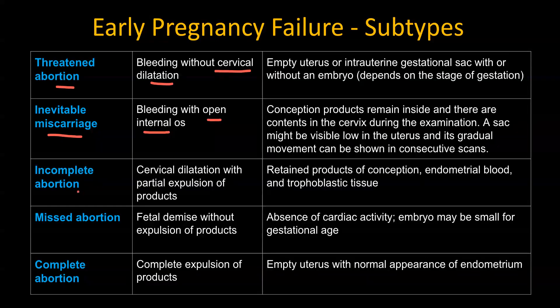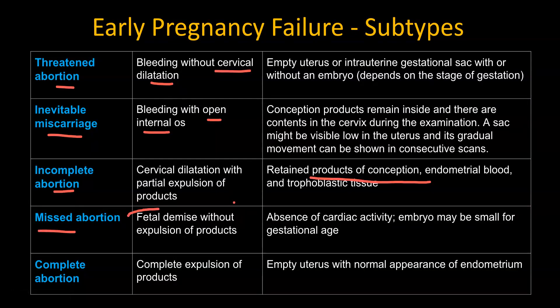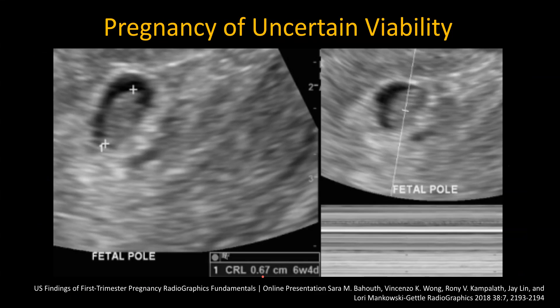Incomplete abortion is when there is cervical dilatation with partial expulsion of products, and you will see retained products of conception with some endometrial content. Missed abortion is when there is fetal demise with no expulsion of products — on ultrasound you'll see a gestational sac with a fetus but no cardiac activity, or a large empty gestational sac. Complete abortion is when there is complete expulsion of products, the uterus is empty, and there are no retained products. Anything between a normal pregnancy and definite failure would be a pregnancy of uncertain viability, and it's best to suggest a follow-up in two weeks.